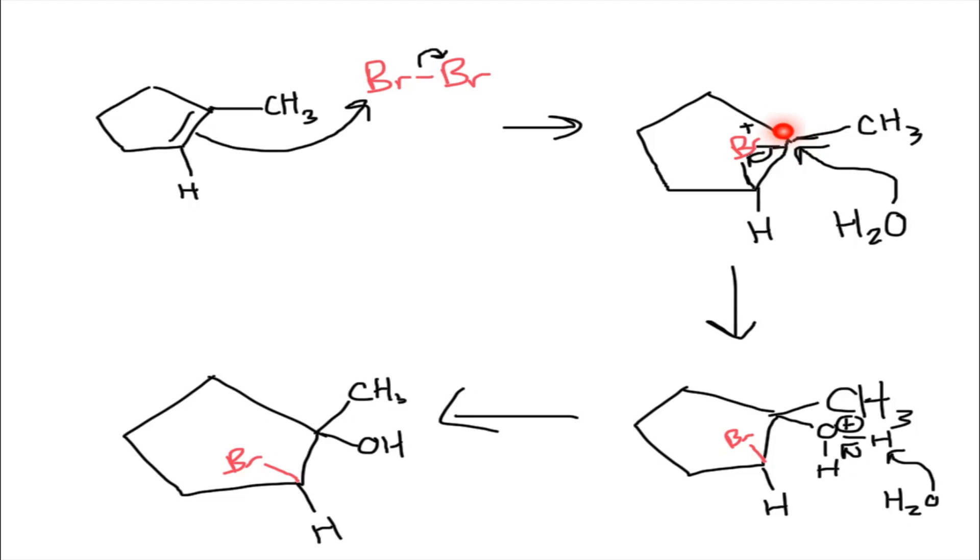And this carbon right here has a partial positive charge on it. And so what's going to happen is the water molecule is going to approach from the opposite side of the bromine. So bromine is on top, the water is going to approach from the bottom and it's going to do an SN2 attack.